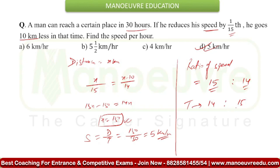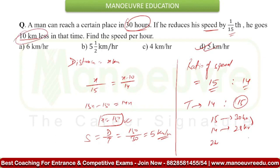Right everyone? The question says the man takes 30 hours in both cases. So the value 15 in the time ratio corresponds to 30 hours. That means the value 14 will correspond to 28 hours. So in this difference of 2 hours, the man has travelled 10 km less. In 2 hours, 10 km less is covered — so speed is equal to distance upon time, which is 10 km divided by 2 hours, giving 5 km per hour.